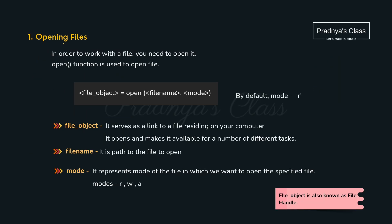So let's check out how to open the file. Opening the file means we are creating the file for different purposes. For that we need to use the open function. The first parameter is the file name, and the second parameter is the mode, which decides for what purpose you are creating that file — for reading, writing, or to append data to the file. The default mode is read mode.